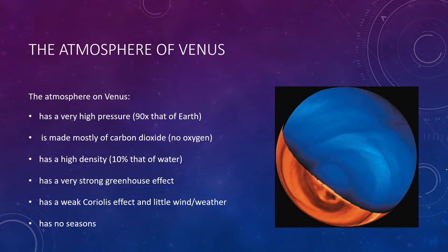Looking upward, you would see a perpetually overcast sky, with only weak sunlight filtering through the thick clouds above. Because the thick atmosphere scatters nearly all of the blue light away, the dimly lit sky will appear reddish and orange in color. Venus's slow rotation — 243 Earth days — means that it has a very weak Coriolis effect, and as a result, Venus has little wind on its surface and never has any hurricane-like storms.